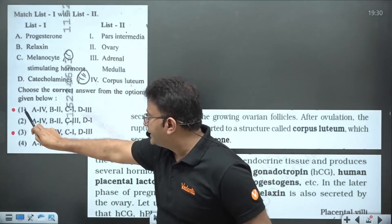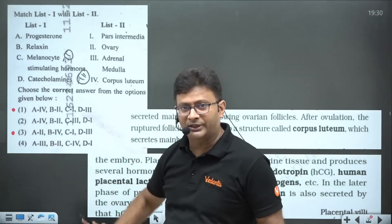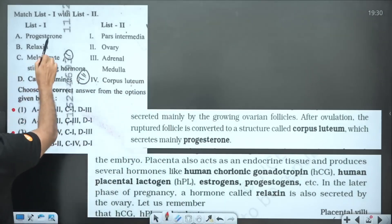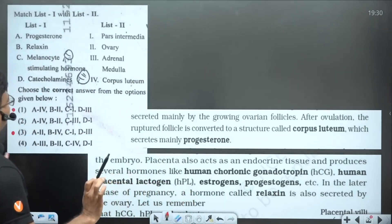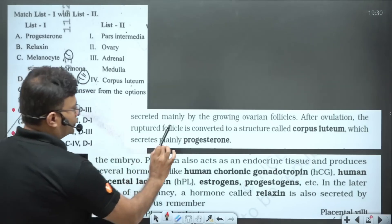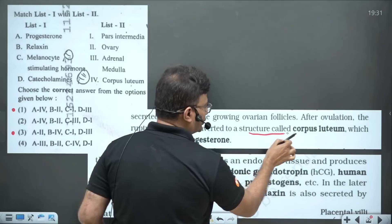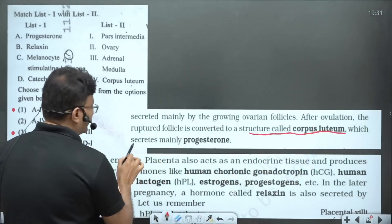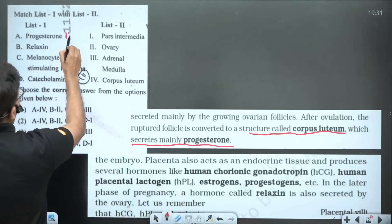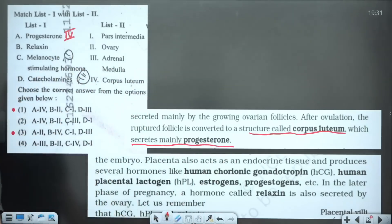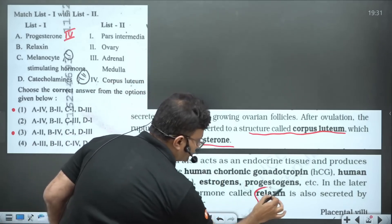Children are confused between the first and third options — many have used third, many have used first. I will clear the confusion. If we talk about progesterone, it is released mainly from the ovary, and within the ovary there is a structure called corpus luteum which secretes mainly progesterone. So for progesterone, you will apply corpus luteum.